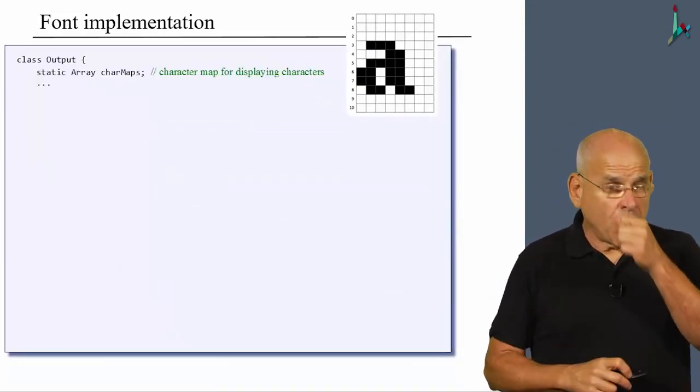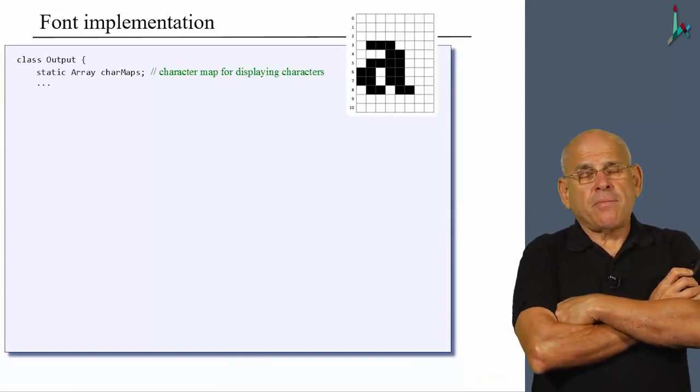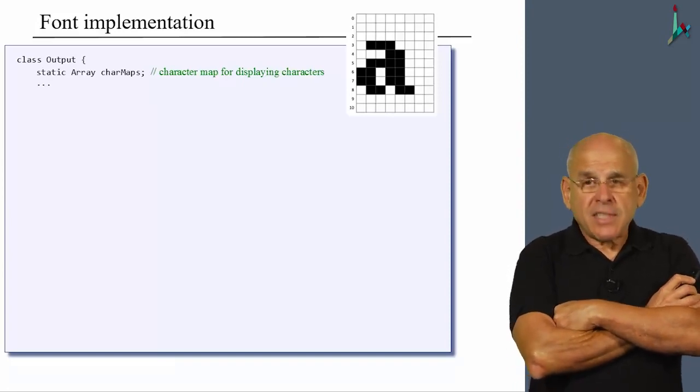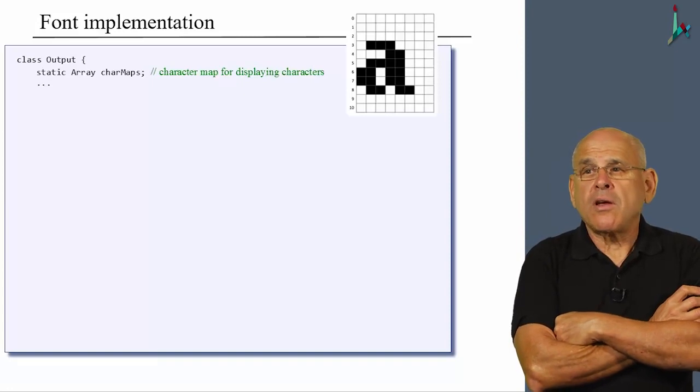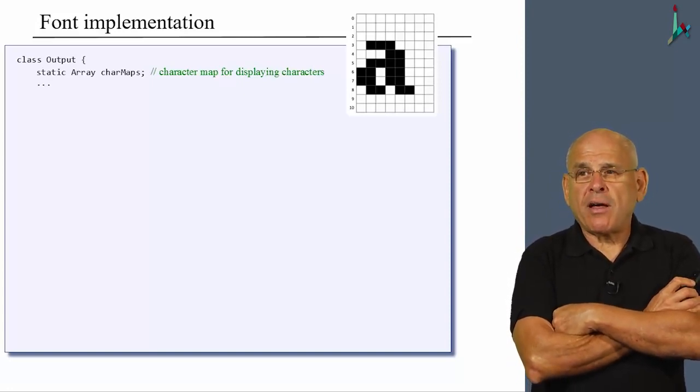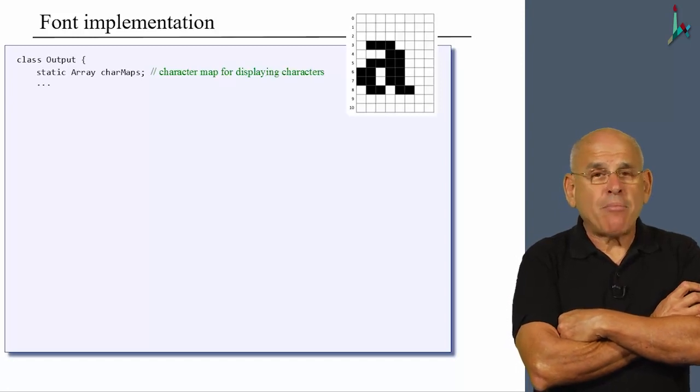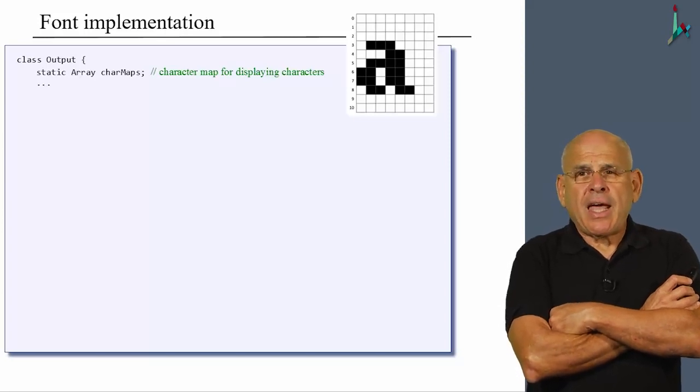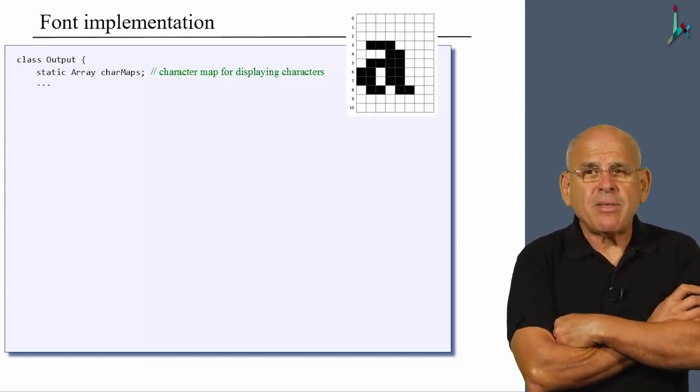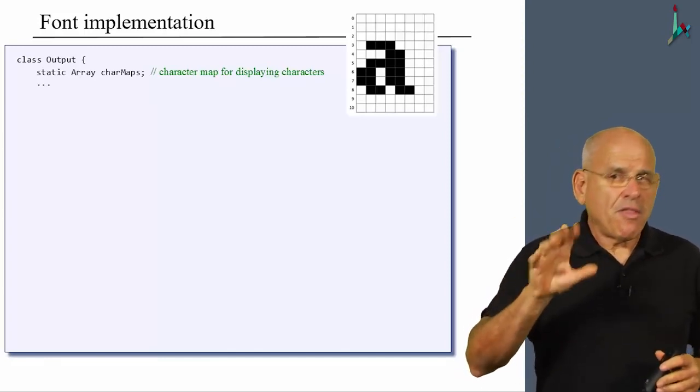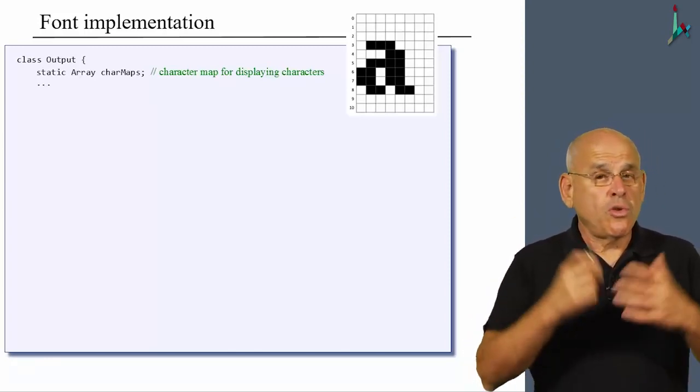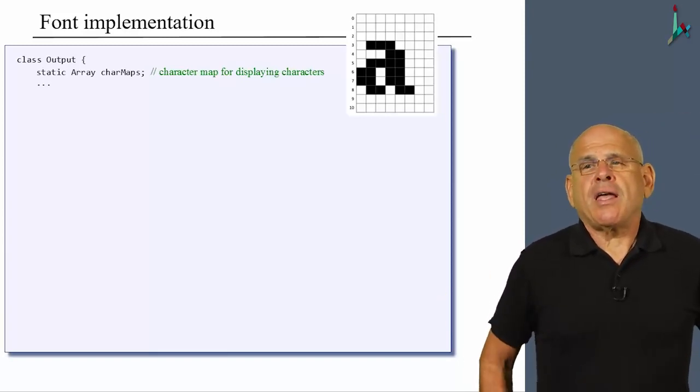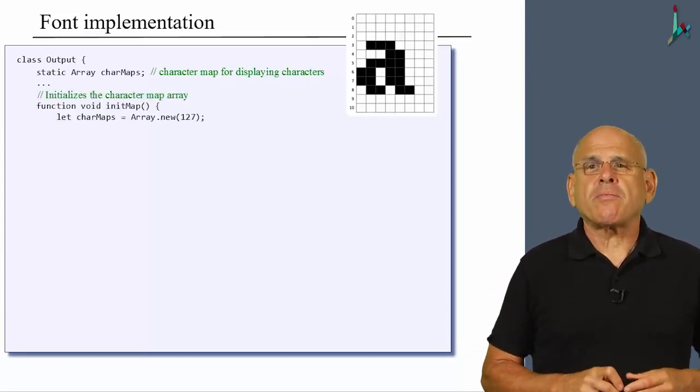So here is this output class. And as you see, we begin by defining a static array called character maps. This array will hold all the bitmaps of every member in our character set. Altogether, 127 characters. Notice that it must be static. It must be static because we want every method in this class to use this font for various purposes. So we put it up at the class level, and this way everyone can use it.